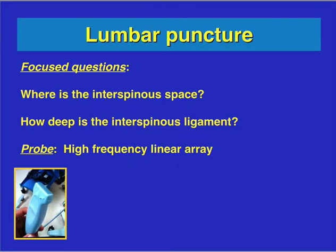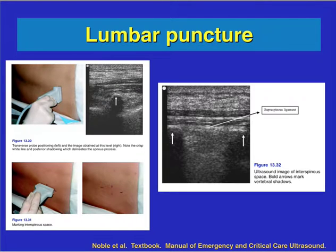The last section covers lumbar puncture. This is very rarely done in surgical ICUs, but it is more common in emergency medicine, medical ICU, and neurosurgical ICU settings. The key focus questions are: where is the interspinous space, and how deep is the interspinous ligament? The probe you use is the high-frequency linear array probe, although in obese patients you may need the abdominal probe. Most of the time the high-frequency linear array is sufficient.